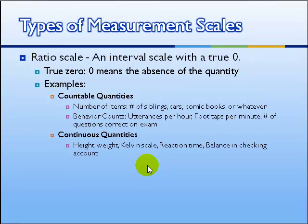An interesting case is a balance in a checking account. It is a ratio scale, because zero means you have no money in the checking account. What's interesting about it is that it can go negative. That is, if I have negative $10 in my checking account, then I owe the bank money. But it is a true ratio scale.